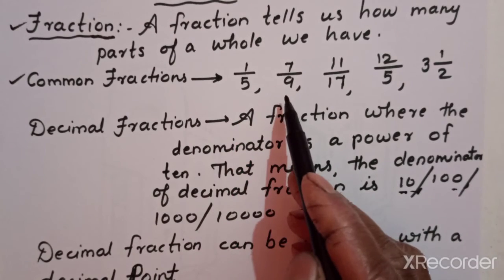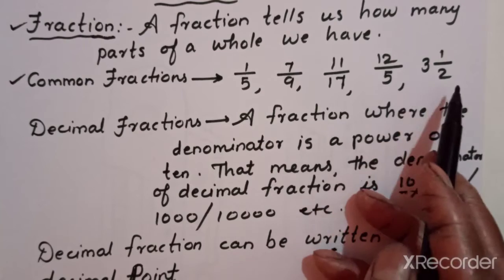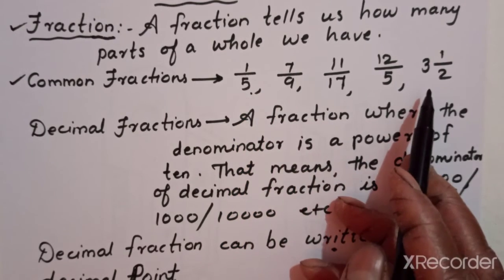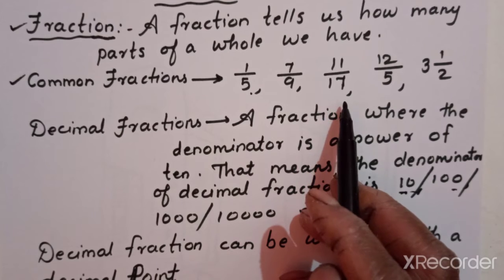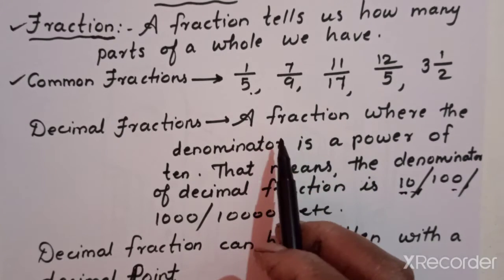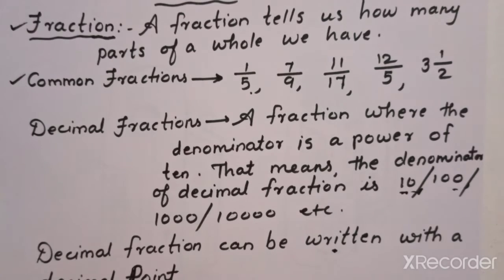The denominators in common fractions are five, nine, eight, seventeen, two, etc. But if the denominator is ten, hundred, thousand, ten thousand, lakh, or ten lakh — all these are powers of ten. If any of these comes in the denominator, then we can say that it is a decimal fraction.